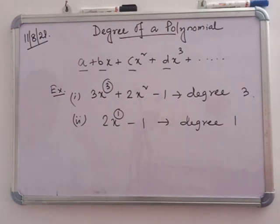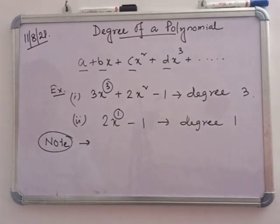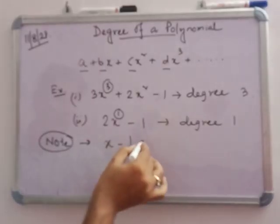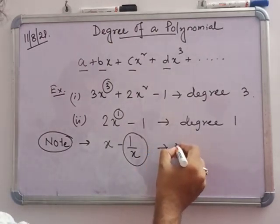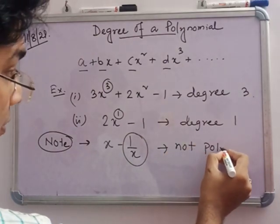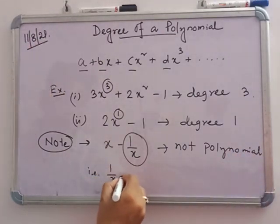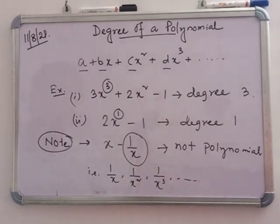When an expression contains terms of the form 1/x, that is not a polynomial. If we see 1/x, 1/x squared, 1/x cubed — all these kinds of terms — then the expression is not a polynomial.